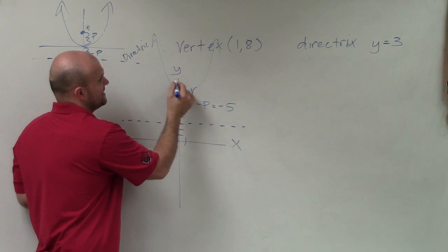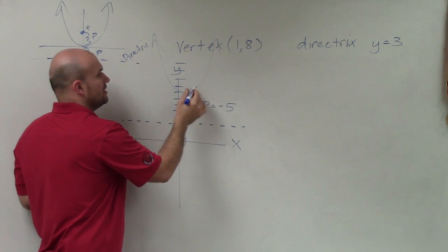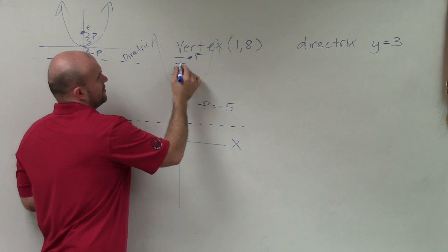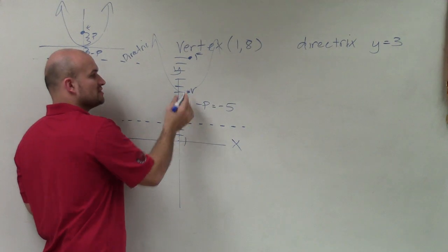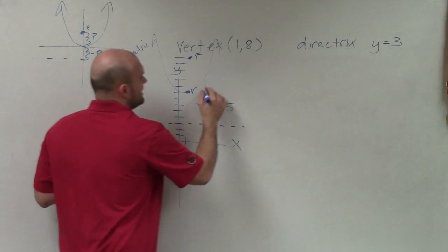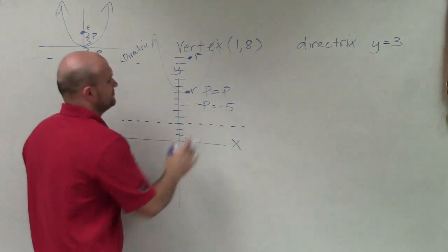Which would be, if that's at 8, 9, 10, 11, 12, 13. So that would be my focus, which is going to be a distance of positive 5 up. So p = 5.